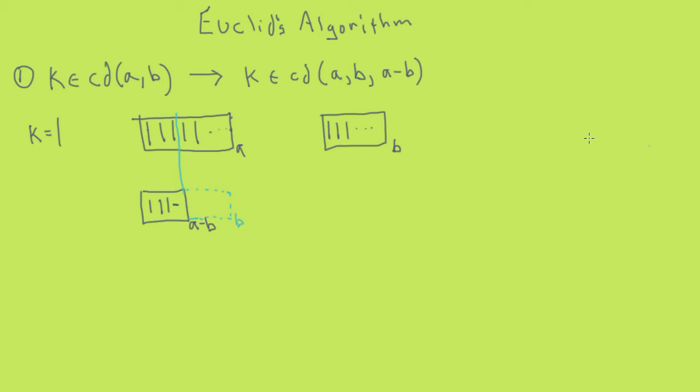Now this proposition proves the following proposition, which is that the greatest common divisor of a and b equals the greatest common divisor of b and a minus b. This is simply because every common divisor of a and b is also a common divisor of b and a minus b. So we can directly use this theorem to demonstrate why Euclid's algorithm works.